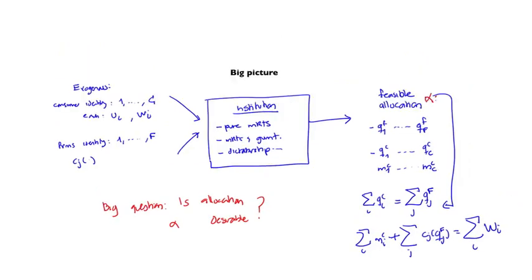One small remark before we move forward. Notice that I have phrased the problem as investigating whether the allocation alpha is desirable for any institution that may generate it. And the reason we want to study that in a little bit more general perspective than just pure markets is because we may want to be interested in looking at other institutions.